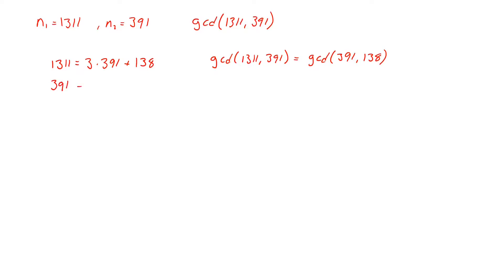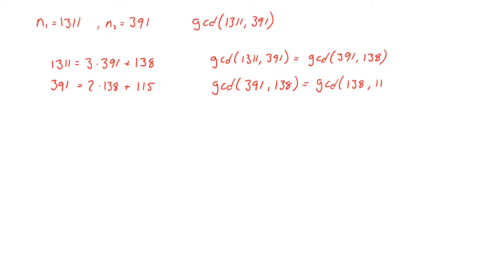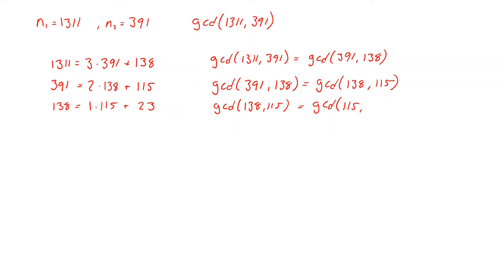We continue: 391 equals 2 times 138 plus 115, which is the remainder when dividing 391 by 138. So the GCD of 391 and 138 equals the GCD of 138 and 115. Then 138 equals 1 times 115 plus remainder 23, and the GCD of 138 and 115 equals the GCD of 115 and 23.